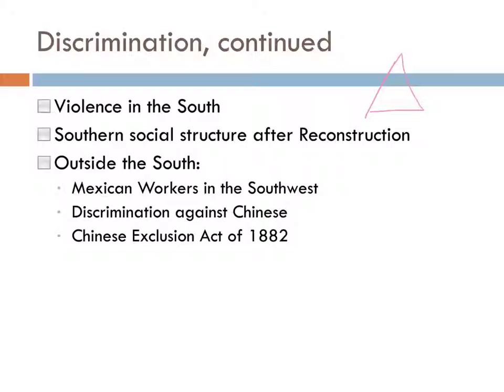Discrimination also existed for Mexican workers in the Southwest and for Chinese laborers in the West. We should also add that discrimination continues in the North, especially related to competition for jobs and tenement house living where people lived very closely together in cities. There will be racial problems, and we'll see these really emerge in the 20th century.